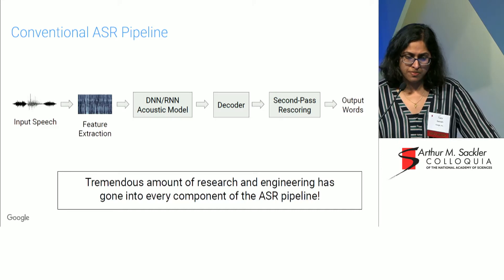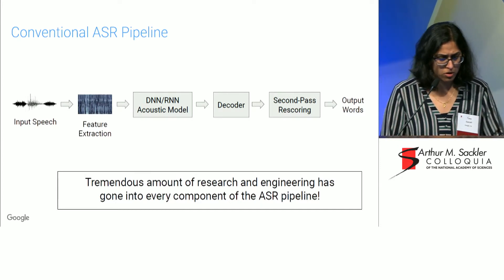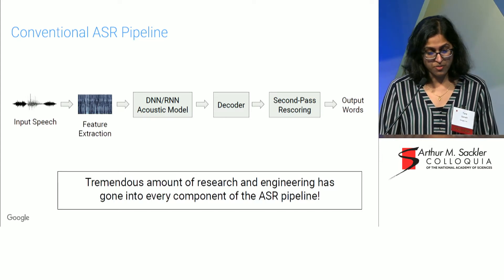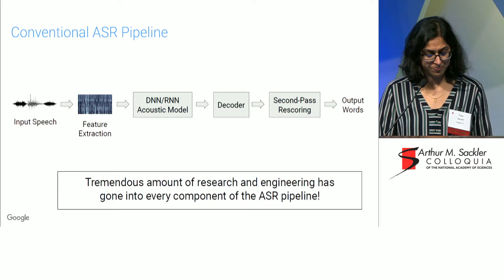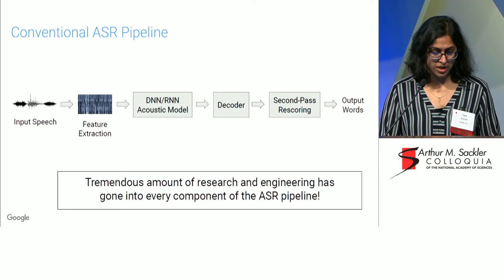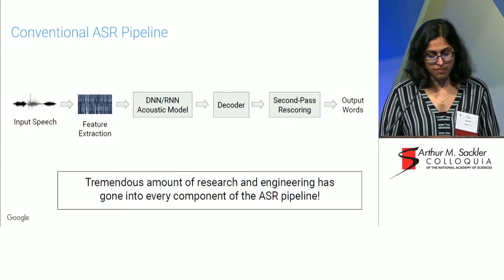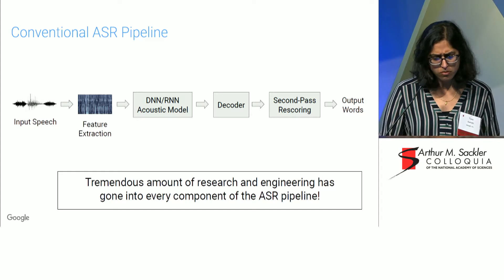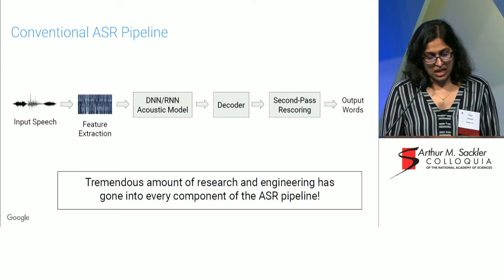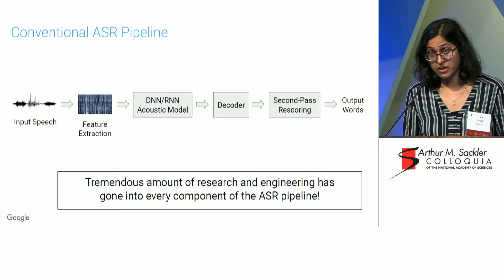A conventional speech recognition system that you would use on a phone today — anything from Google, Apple, Amazon, and so on — is going to be made up of the following components. You would take your input speech signal. There would often be a team of researchers who have done extensive research into what are the appropriate features to model the signal with. Then there's a lot of research that goes into what's the right model to take these features and represent them by some subword units. That's known as the acoustic model. And then there's a decoder which will take subword units and map them toward words, and oftentimes we could have a second pass rescoring system which sees the entire utterance and rescores hypotheses. The point is that there's a tremendous amount of research and engineering that's gone into every single component of this pipeline, and a lot of it requires very domain-specific knowledge.